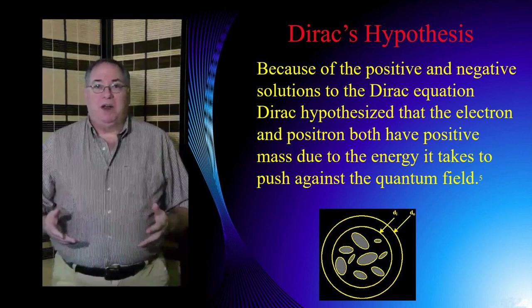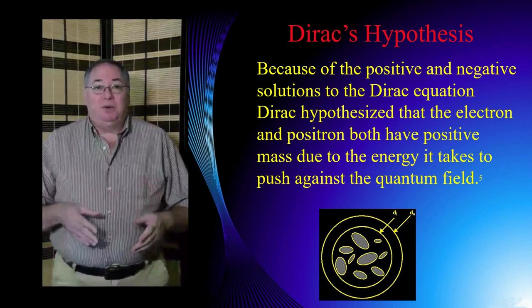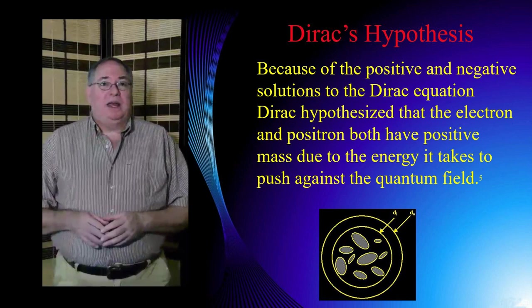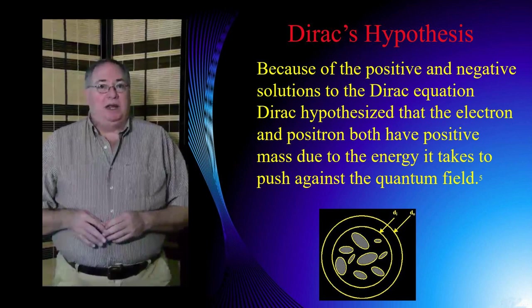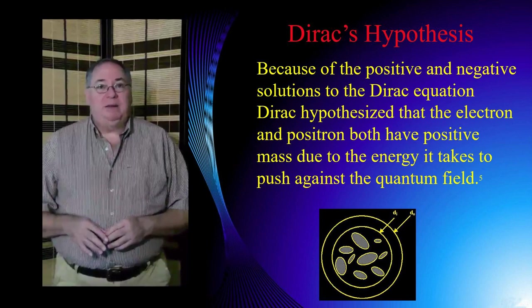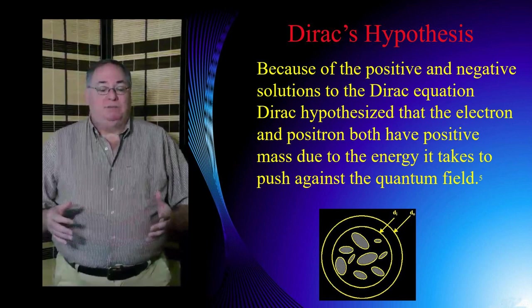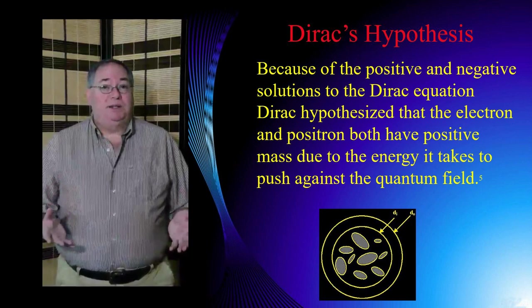Now Paul Dirac, as part of the Dirac equation, had two solutions to the equation. And one part of the term was mc squared and the other one was negative mc squared. So he had this question of what's this negative energy? And of course we realize now, and he's been given credit for discovering antimatter, that this negative energy particle was antimatter.